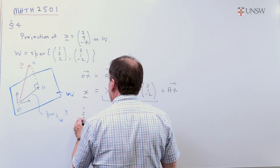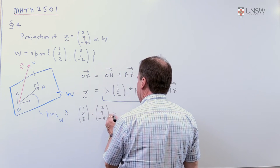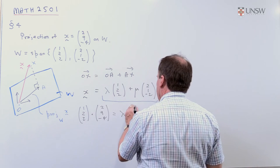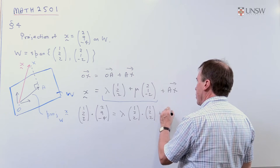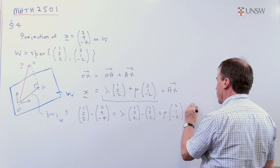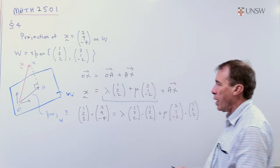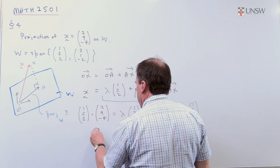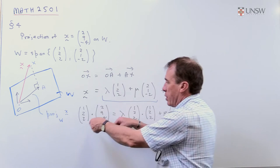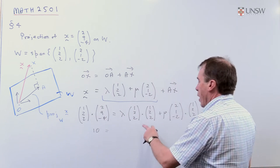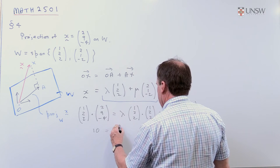So when I do that, I get (1,2,2) dotted with (2,9,4), that's my X. I get lambda times (1,2,2) dotted with (1,2,2) plus mu times (2,1,-2) dotted with (1,2,2). So I just dot product both sides. Now, that gives me, let me check the arithmetic, you get 18 minus 8 plus 2. Over here, I get 4, 8, 9, lambda.